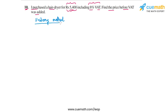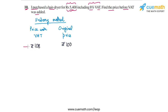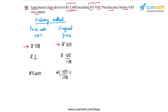Let's first solve this using the unitary method, and then we will solve it using an equation approach as well. We know that there is an 8% VAT, which means that if the original price is rupees 100, the price with VAT will be rupees 108. So for a price with VAT of rupees 108, the original price is rupees 100. This means that if the price with VAT is rupees 1, the original price will be rupees 100 by 108. And if the price with VAT is rupees 5400, the original price will be rupees 100 by 108 into 5400.